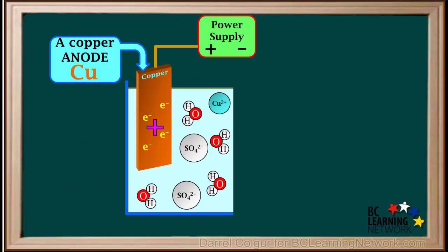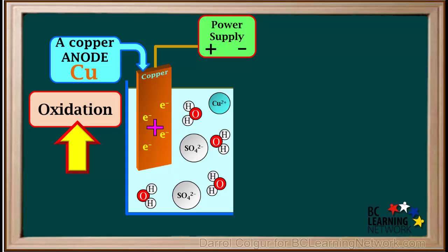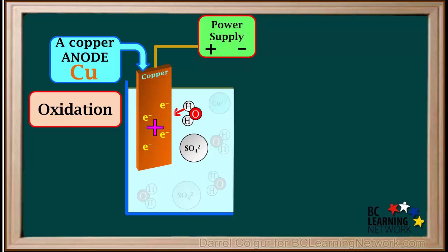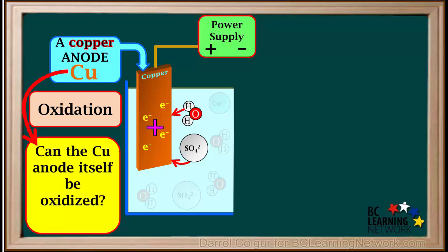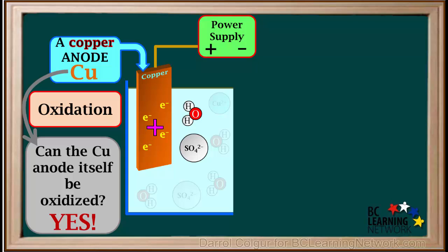Now we'll focus on the anode. Remember, oxidation occurs at the anode. Because the anode is positive, it will not attract positive copper ions, so one candidate for oxidation is water. Another candidate is the sulfate ion. But the anode itself is not inert — it is the metal copper. So the question we must ask is: can the copper anode itself be oxidized? The answer is yes. Metal atoms can be oxidized and lose electrons to become cations. So we have three candidates for oxidation at the anode: water, the sulfate ion, and the copper anode itself.